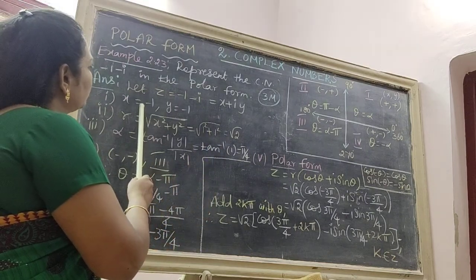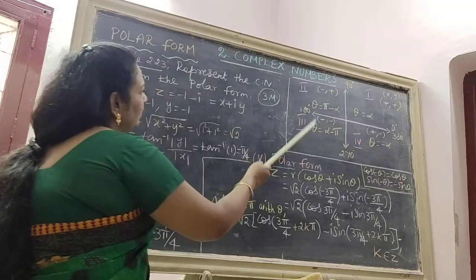Next here, x value is minus, y is minus. Therefore, we get the third quadrant.